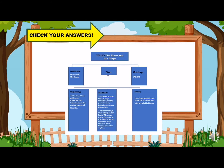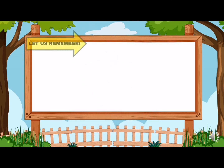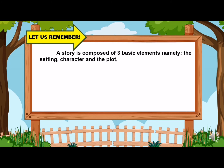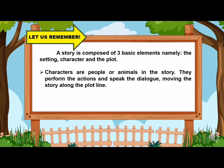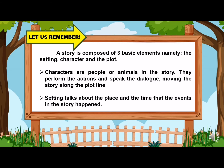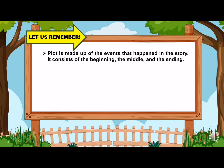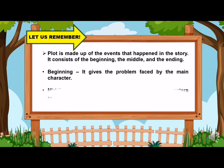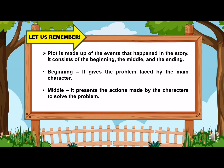We are almost done with our session, kids. Now let us give emphasis on the terms we need to remember. A story is composed of three basic elements, namely the setting, plot, and character. Characters are people or animals in the story — they perform the actions and speak the dialogue, moving the story along the plot line. Setting talks about the place and the time that the events in the story happen. Plot is made up of the events that happen in the story. It consists of the beginning, the middle, and the ending. Beginning gives the problem faced by the main character. Middle presents the actions made by the characters to solve the problem. And ending gives the solution to the problem.